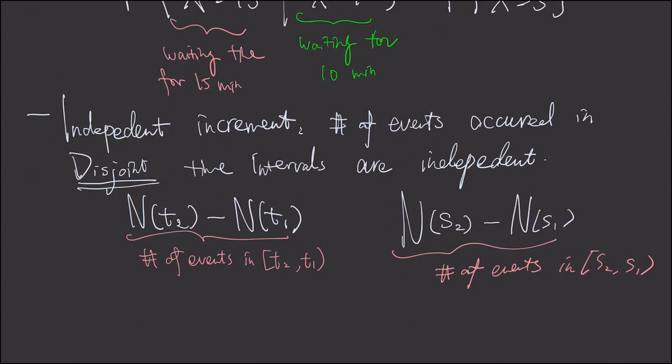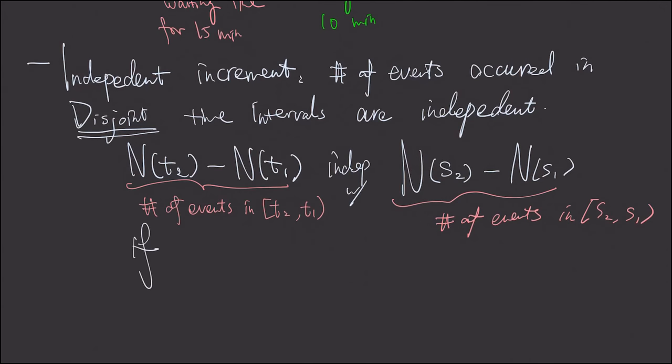Now, this is independent with this one if the time intervals t1, t2 and s1, s2, let me use a closed interval intersect with s1, s2, it's empty.